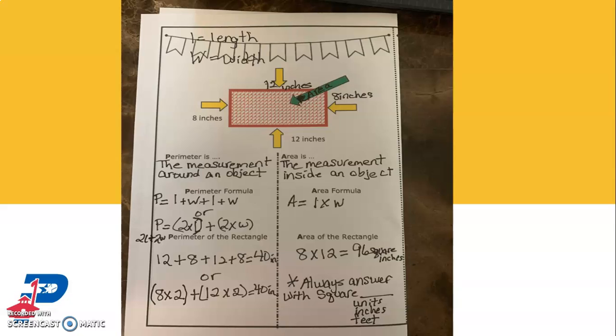And really, area is easier than perimeter because you're just doing, you're dealing with two dimensions. You just need to know the length and the width.